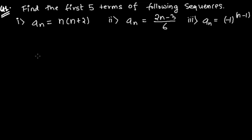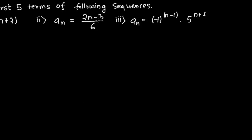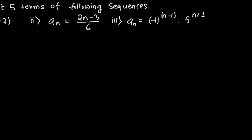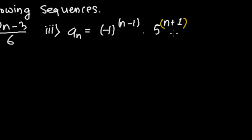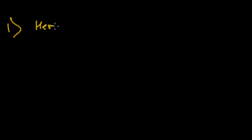Hi friends, here is the first problem of sequence and series. The question says: find the first five terms of the following sequences. First one is a_n = n(n+2). Second one is a_n = (2n-3)/6. And third one is a_n = (-1)^(n-1) times 5^(n+1). So let me do them one by one.